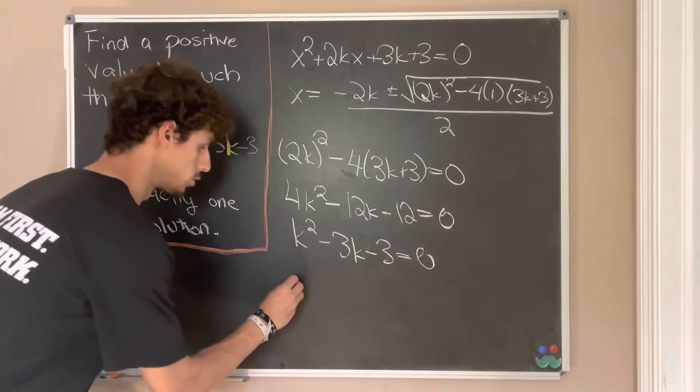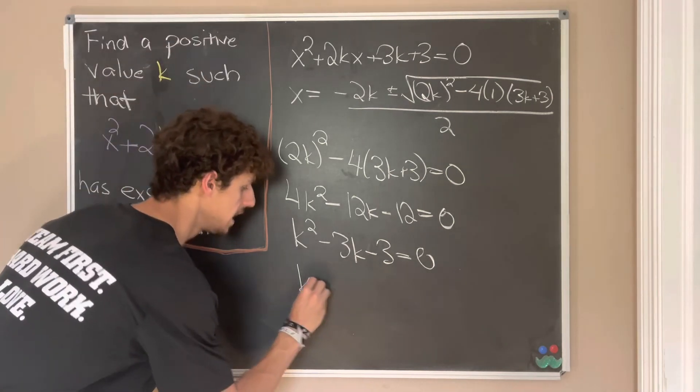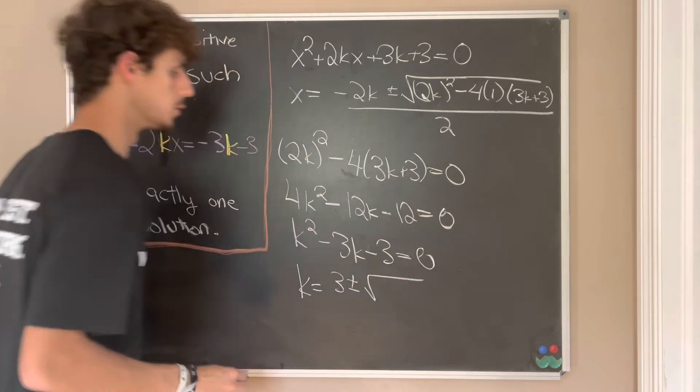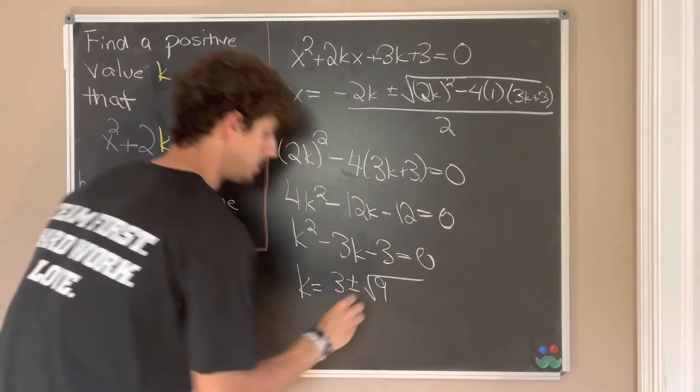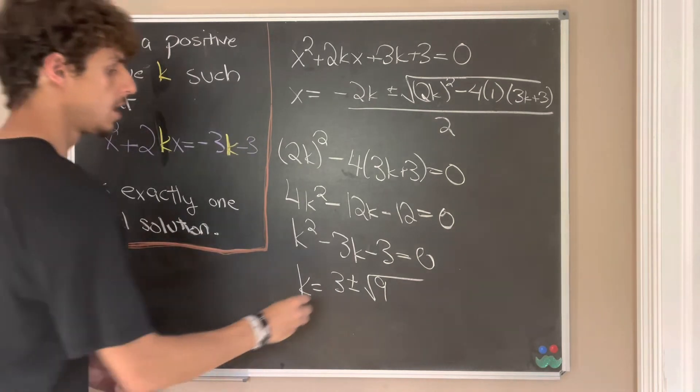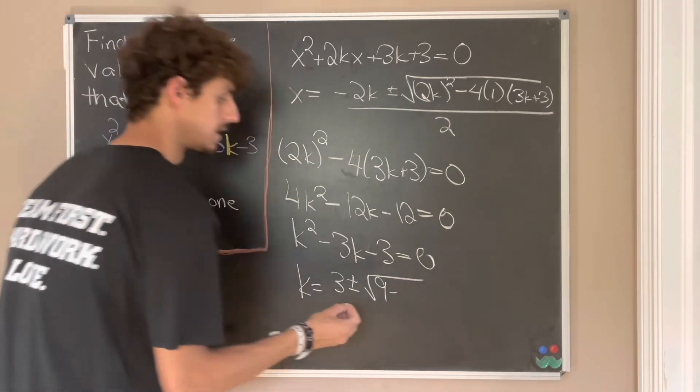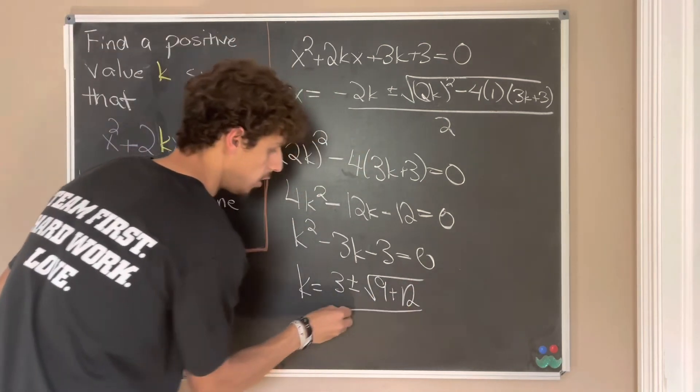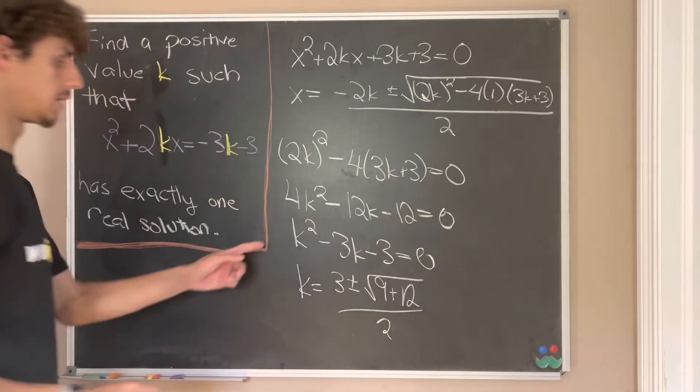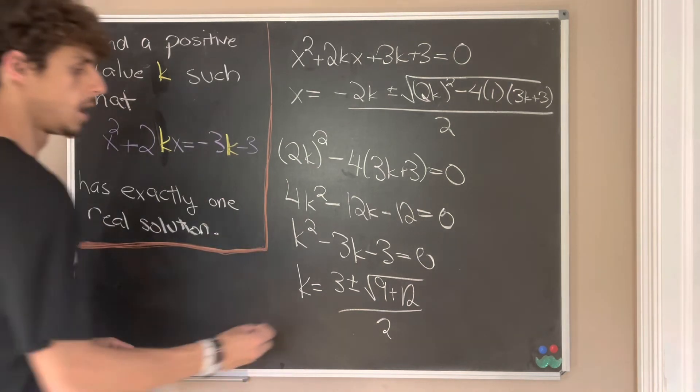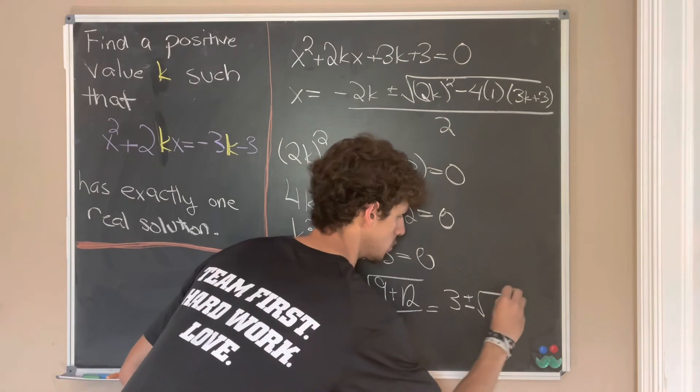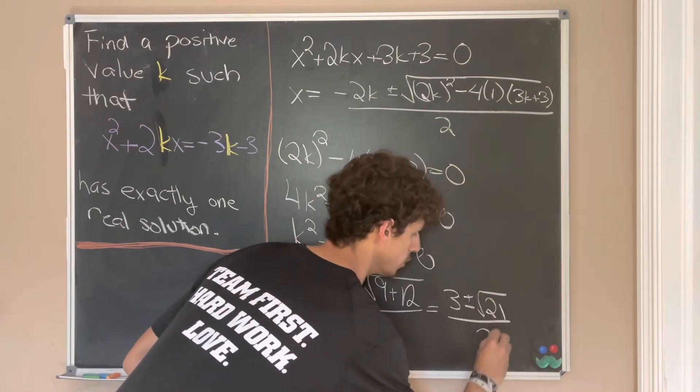But now we can use the quadratic formula on this. So we'll have k is equal to 3 plus minus the square root of 9, that being negative 3 squared, minus 4 times 1 times negative 3, so that'll be plus 12. And that's all over 2, because that's 2 times 1. But now that's going to be equal to 3 plus minus the square root of 21 over 2.